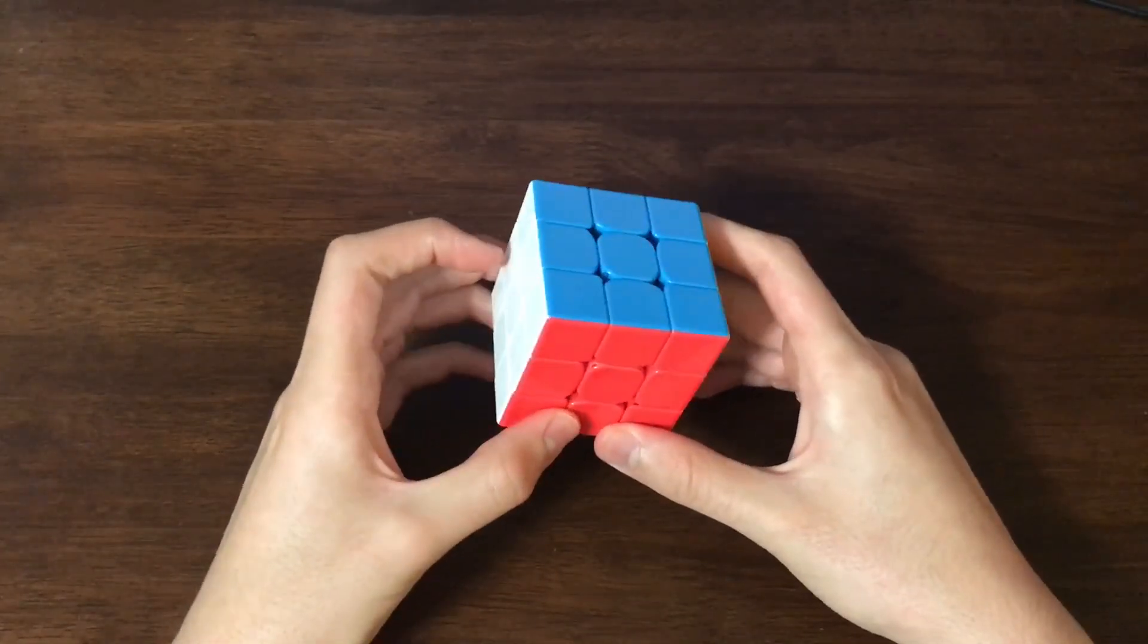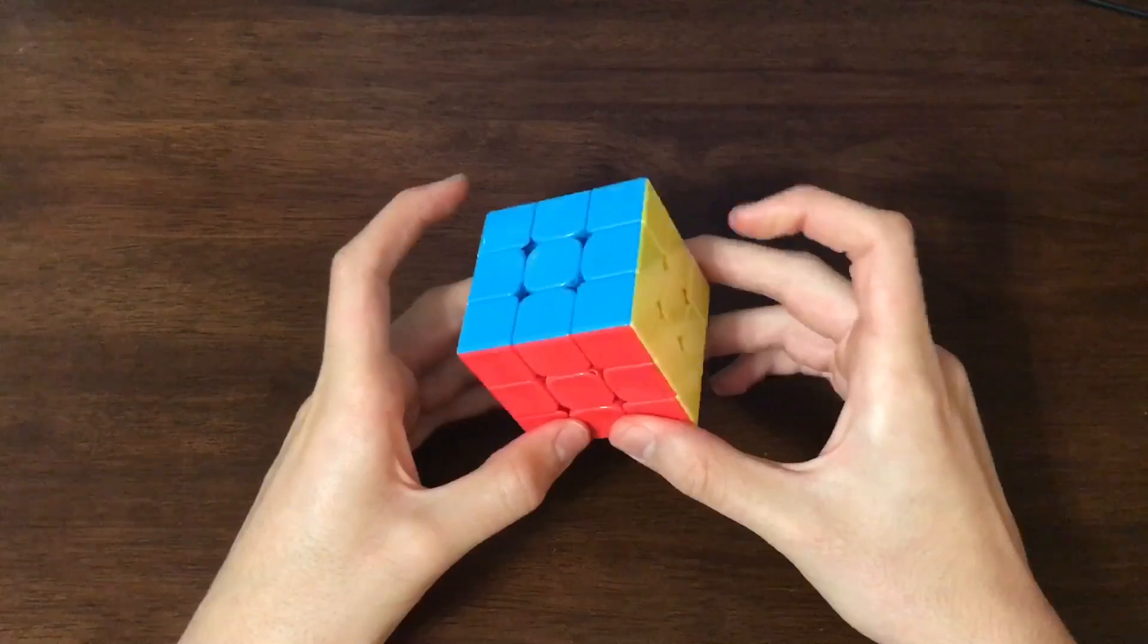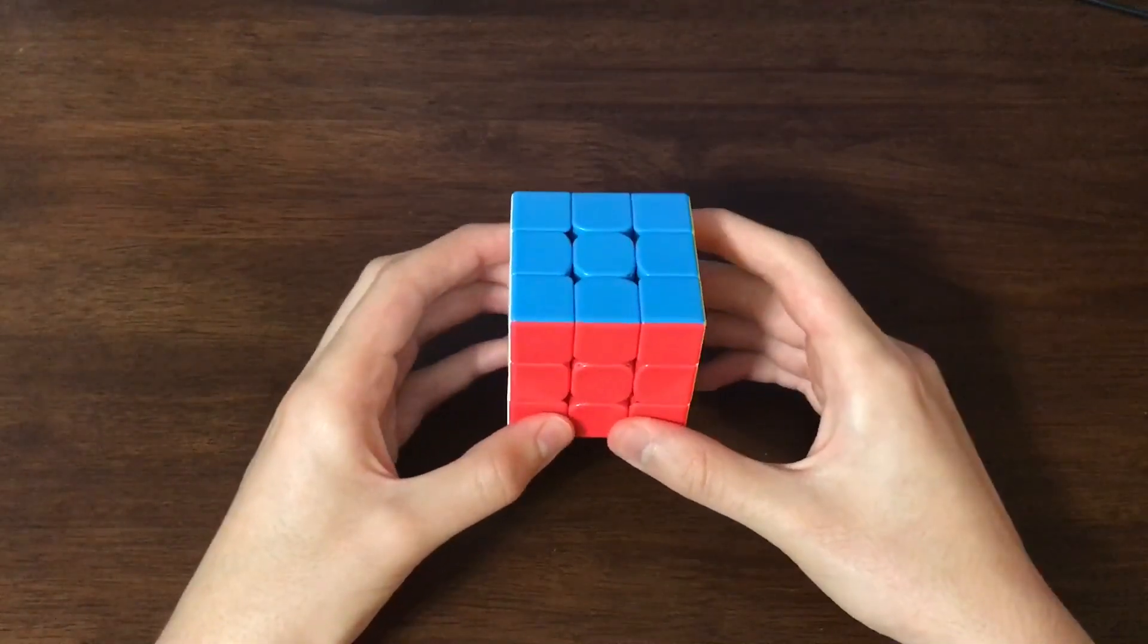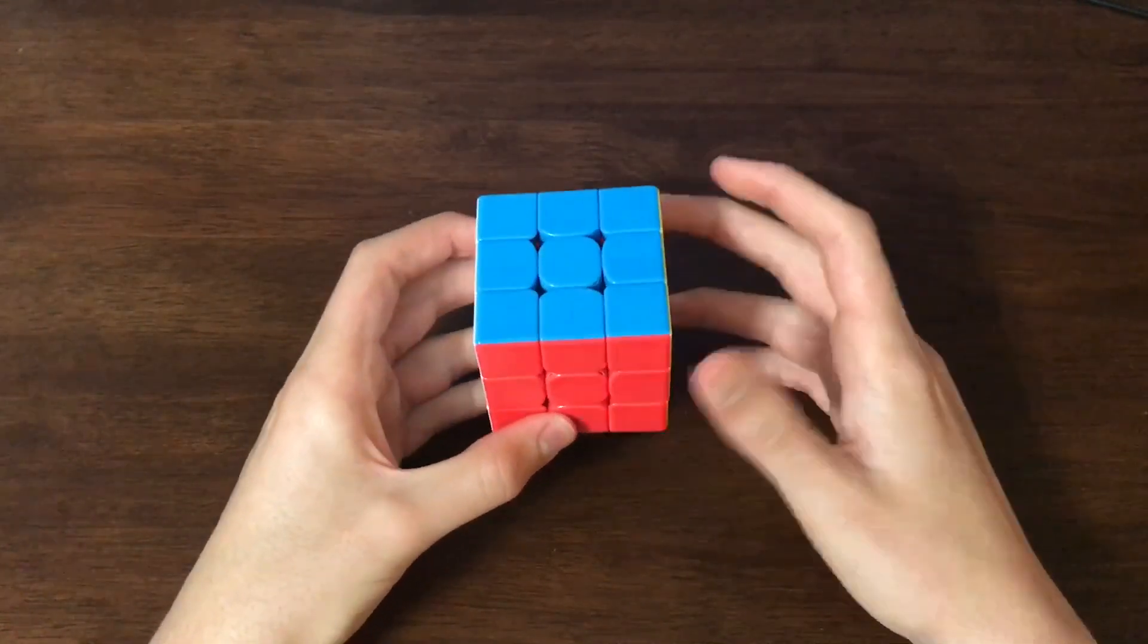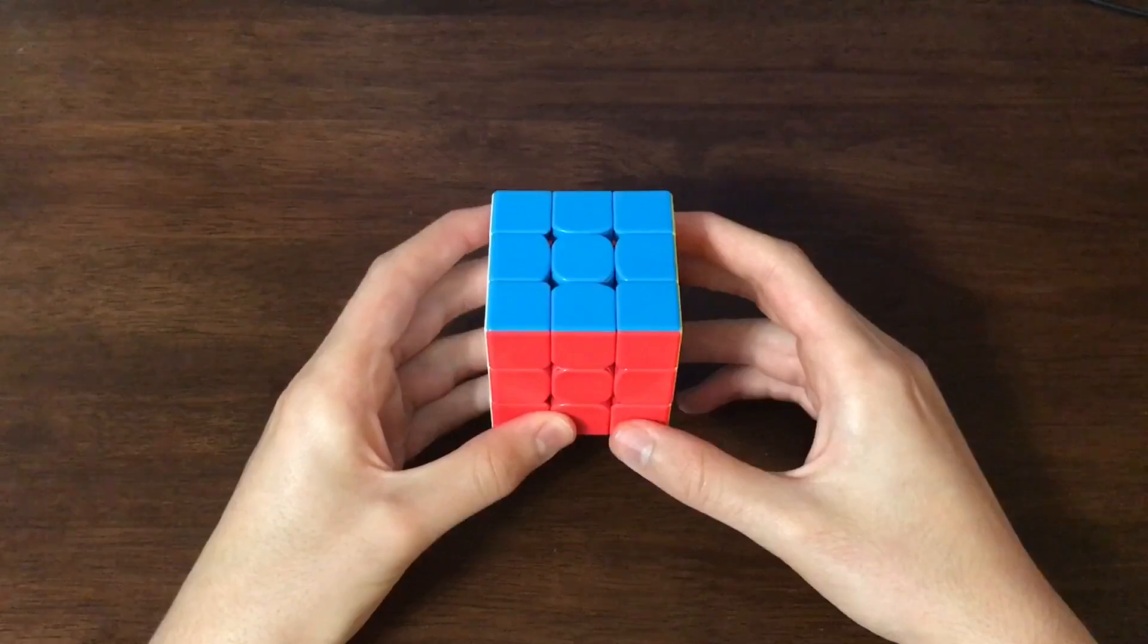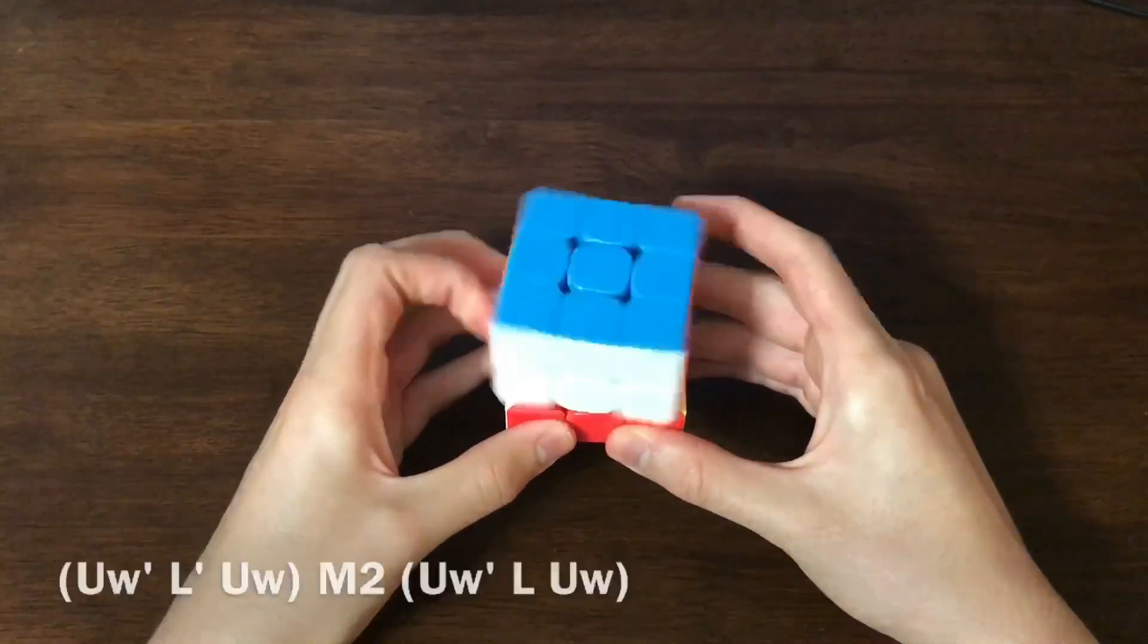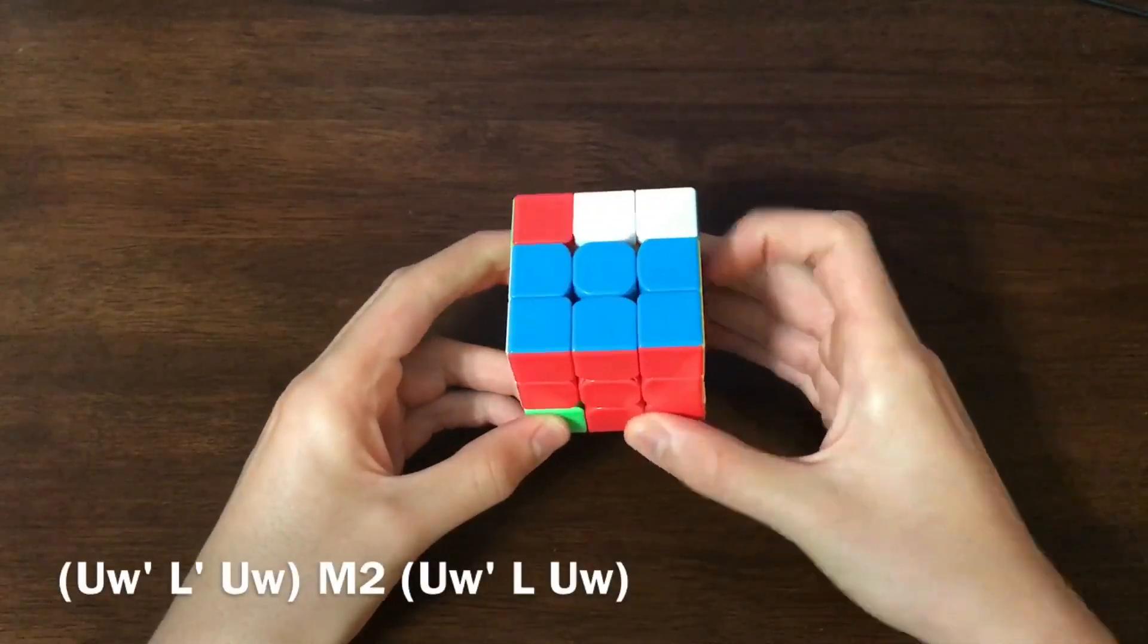And for LB, we can do something very similar, except you get two choices. So the first thing you can do is just mirror that alg. So instead of doing wide U, R, wide U prime, you can do wide U prime, L prime, wide U, like that.